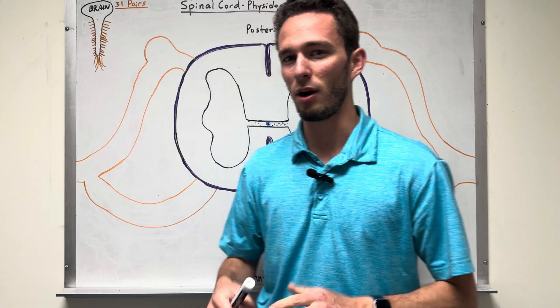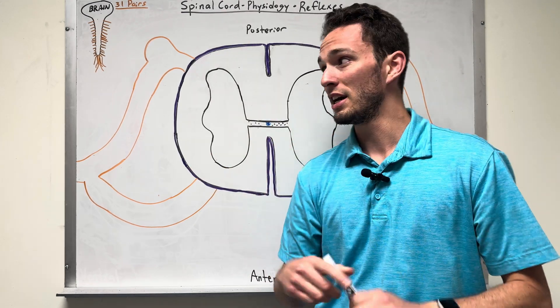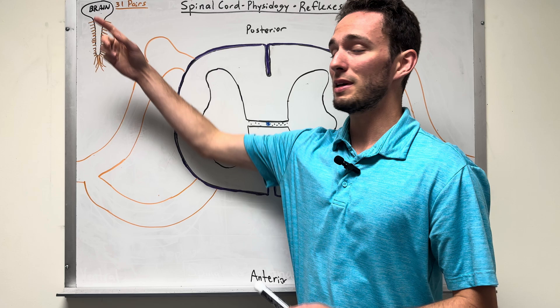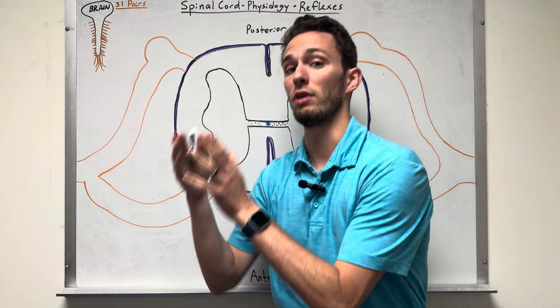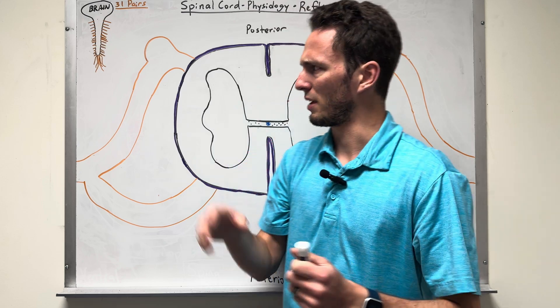Hey everybody, Organized Biology here. We're talking about reflexes and physiology of the spinal cord. So what you need to know first is that the spinal cord is going to be a mediator between what's called the peripheral nervous system and the brain or the central nervous system.